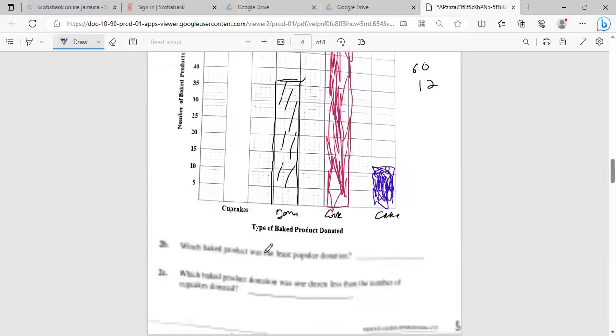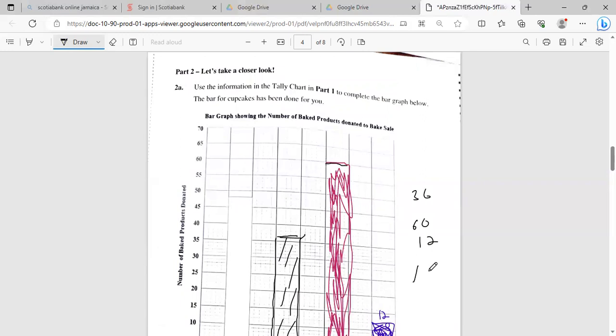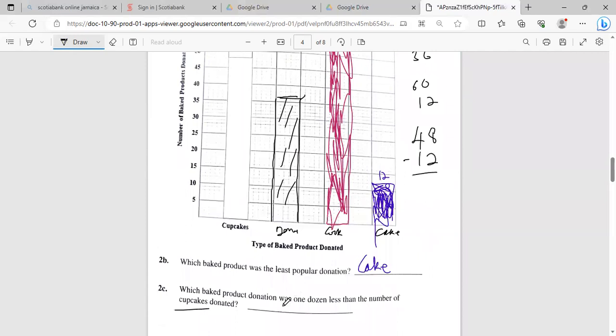And there you have it, that would complete the bar. Which baked product was the least popular? Least popular means the one with the lowest, so that would be cake. They didn't ask for the number. Which baked product dominates when one uses less than the number of doughnuts? So 48 minus 12. Which one was 36? That would be our answer, and that was the donut, which is 36.